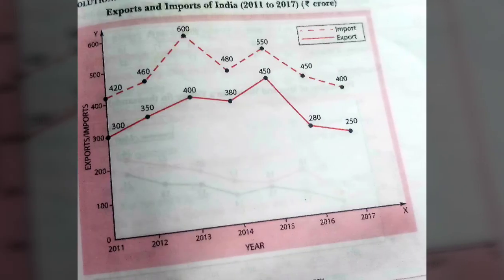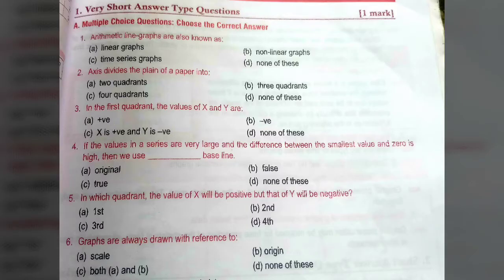Plotting years on x-axis and exports and imports on the y-axis. We have made a bright red color line of exports and slightly dotted line of imports. So that's how we can differentiate and interpret the data. Now these are the questions.